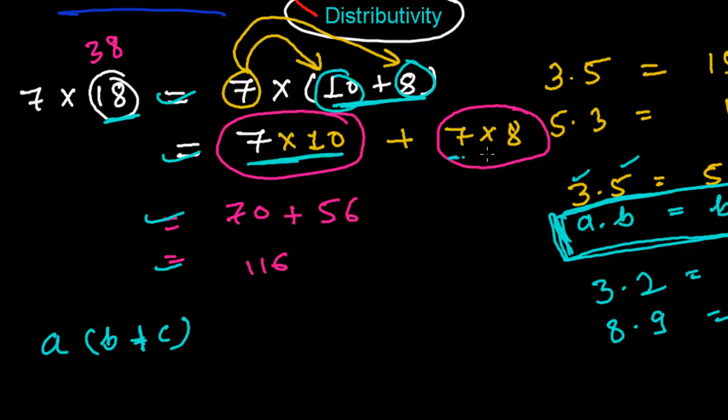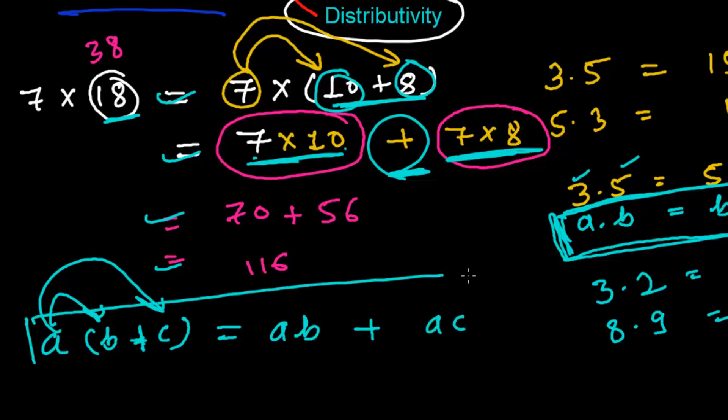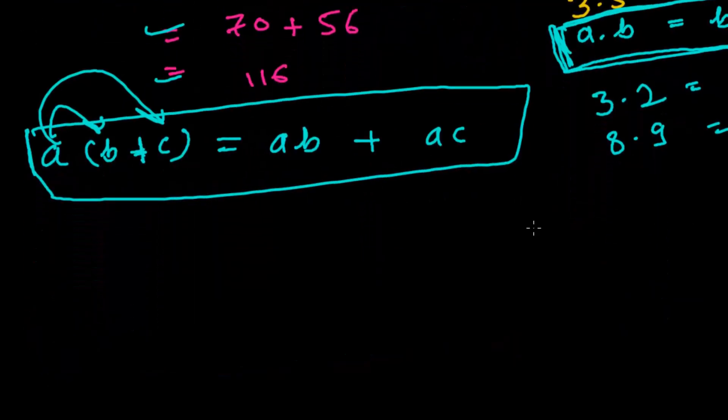Which we further divided like this, further distributed like this. So this is actually 7 times 10, that means A times B, that is AB plus this thing, A times C, AC. And this is the distributive law. Now this is a generalized form for all arithmetic numbers.